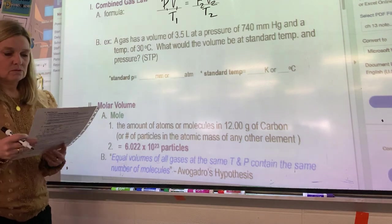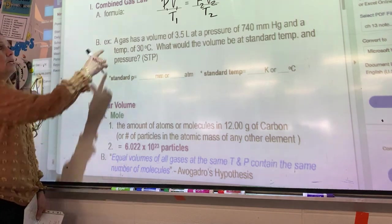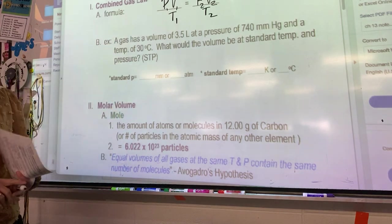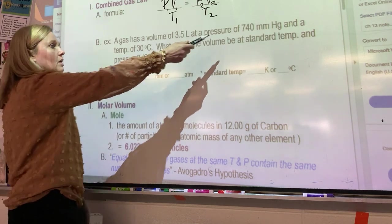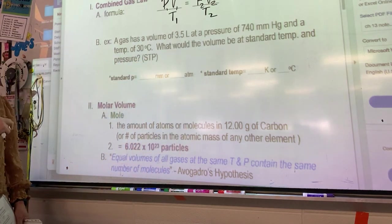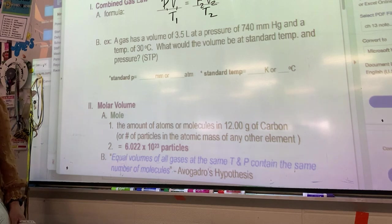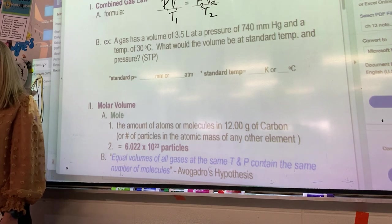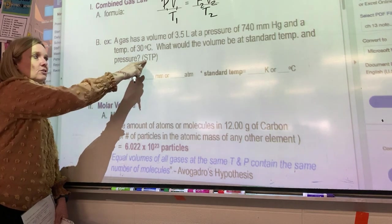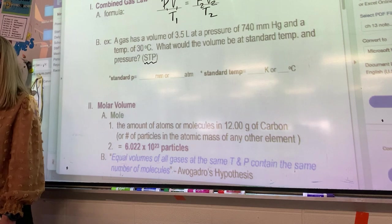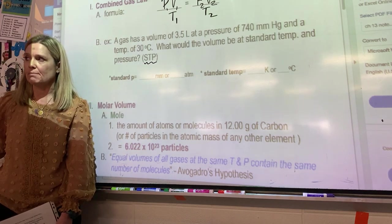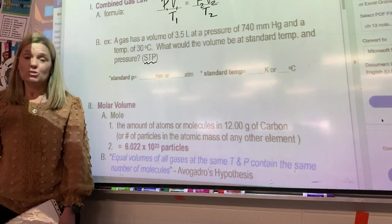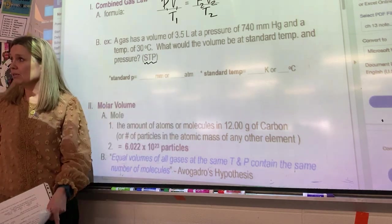Here's the sample problem. A gas has a volume of 3.5 liters, pressure of 740 millimeters mercury, and a temperature of 30 degrees Celsius. What would the volume be at standard temperature and pressure? This is what you were asking the other day. Have you been doing gas laws yet in AP chem? Have you seen STP? You've never seen that word, STP?